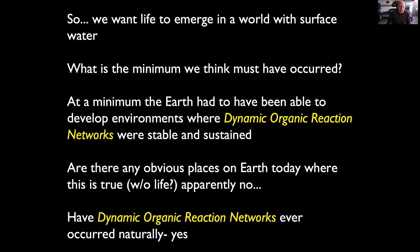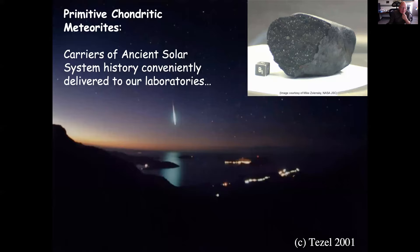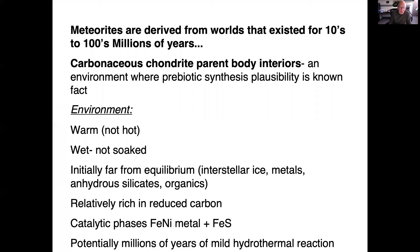If we want life to emerge in a world with surface water, what is the minimum that must have occurred? At minimum, the Earth had to develop environments where dynamic organic reaction networks were stable and sustained. Currently, without life, there don't appear to be such environments on Earth. However, there is evidence of dynamic organic reactions occurring naturally — in the interior of a planetesimal, as identified in a beautiful study by George Cooper.